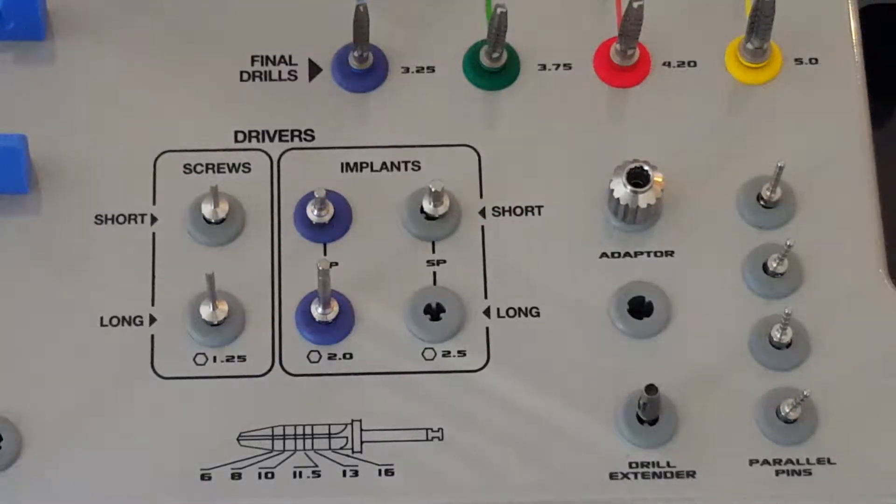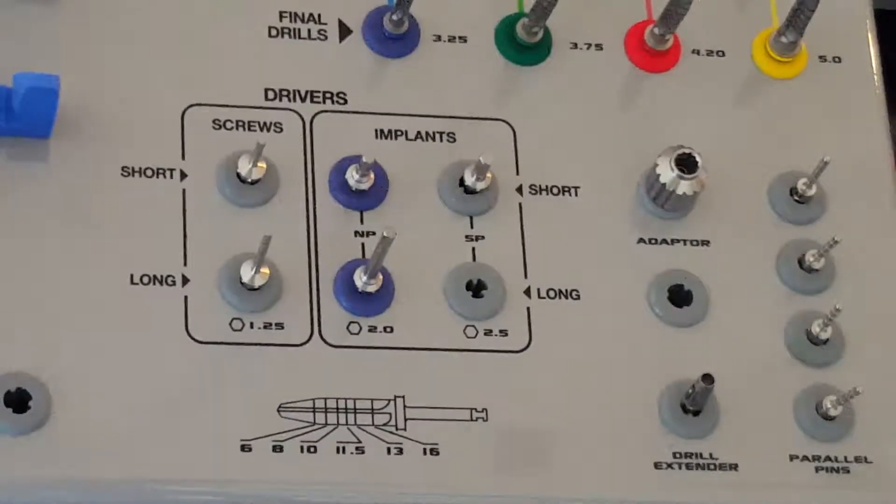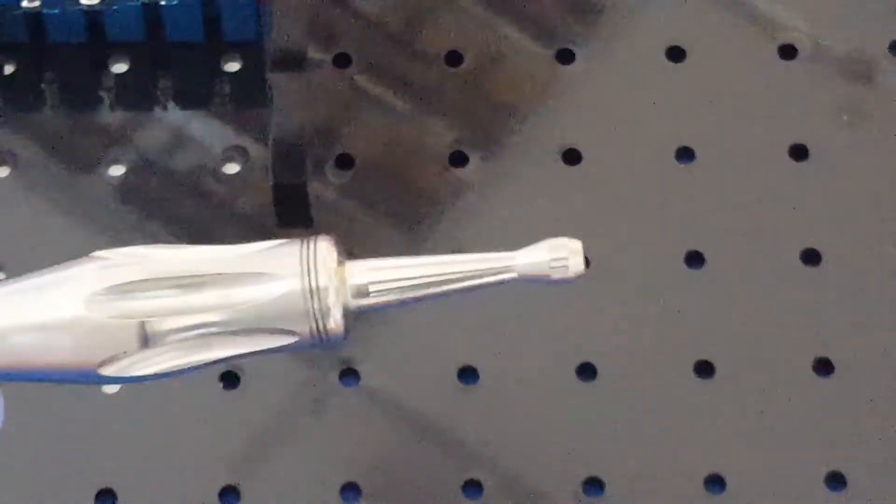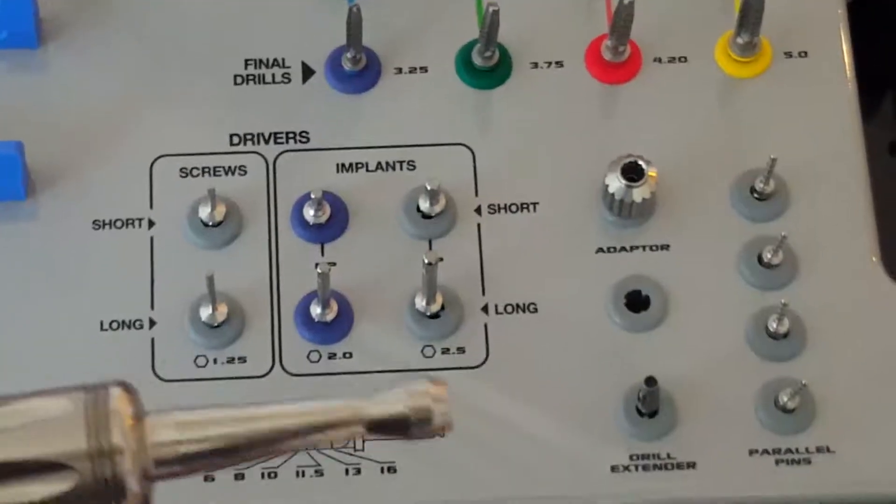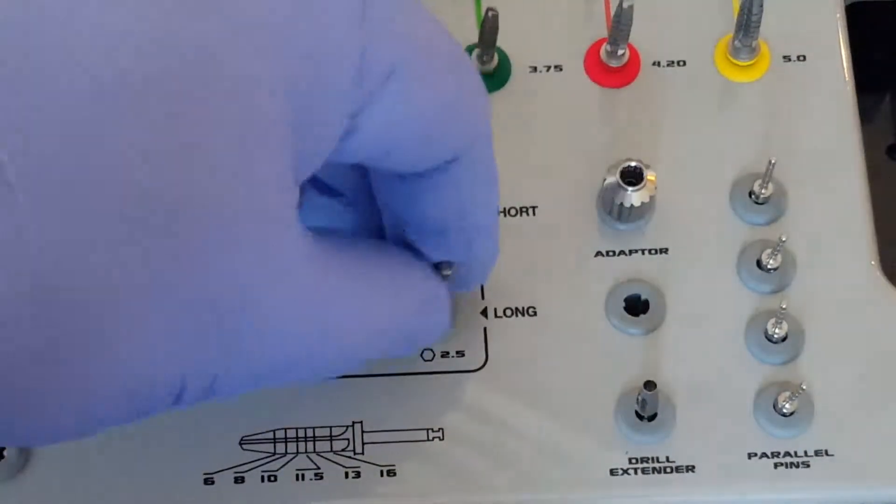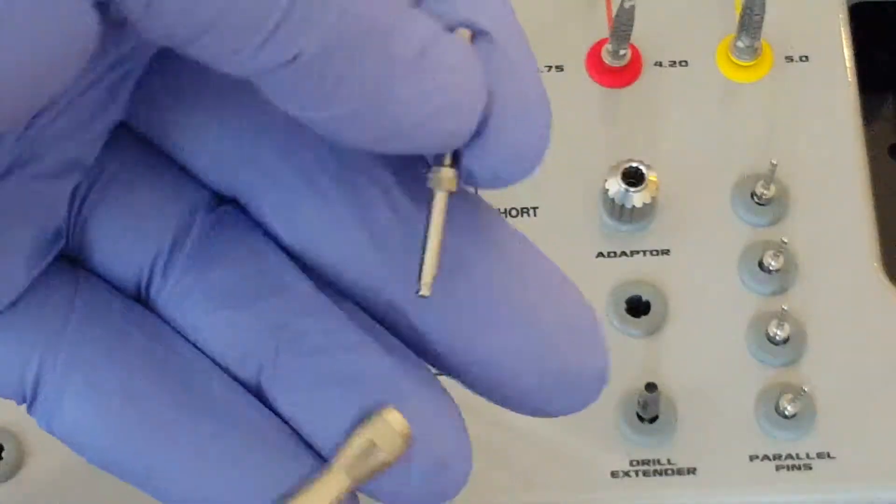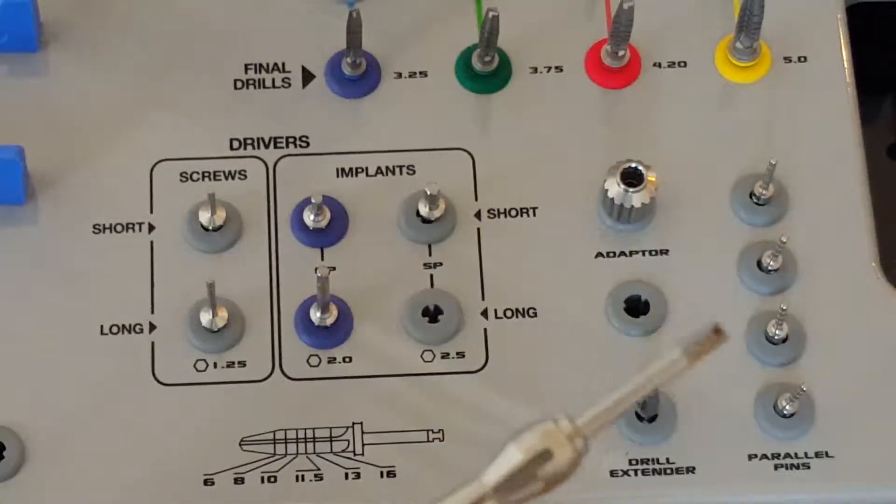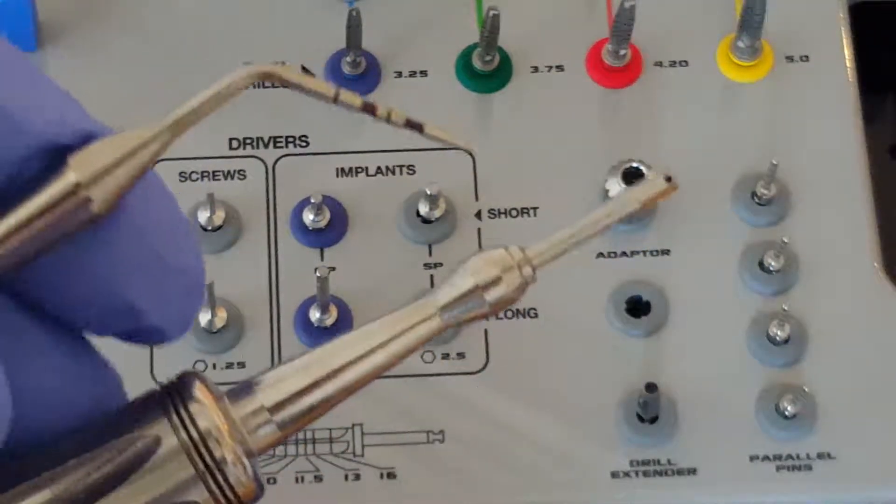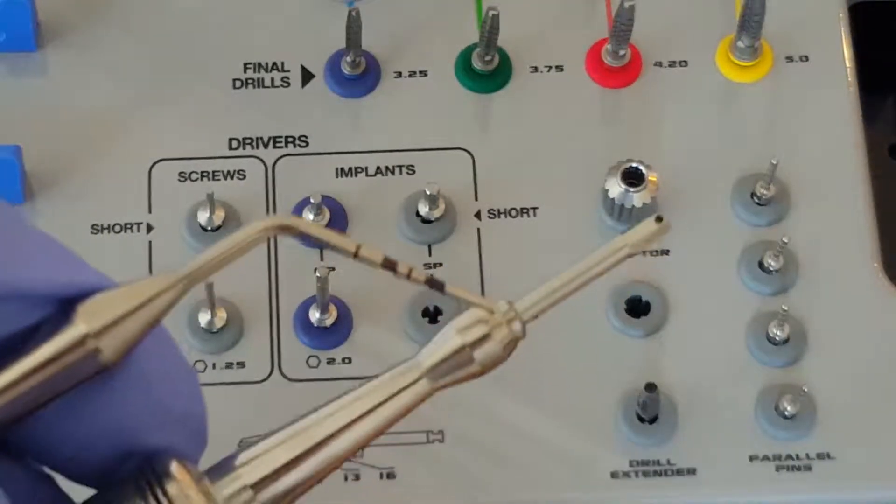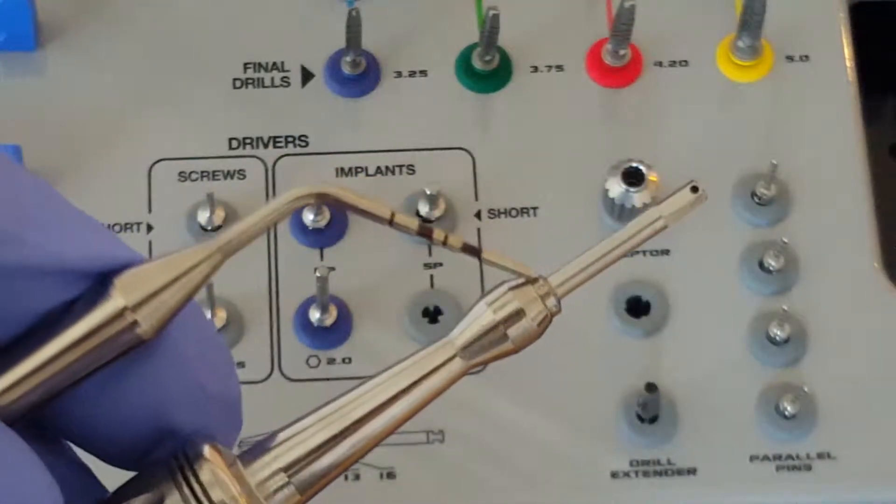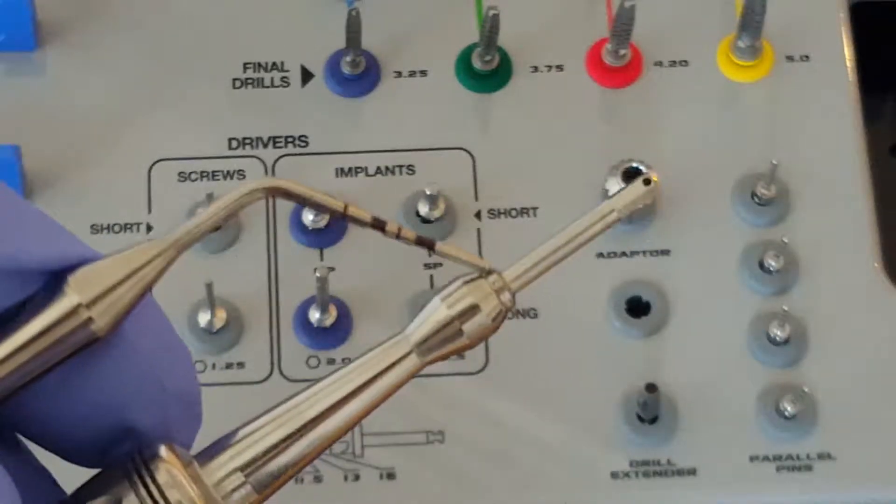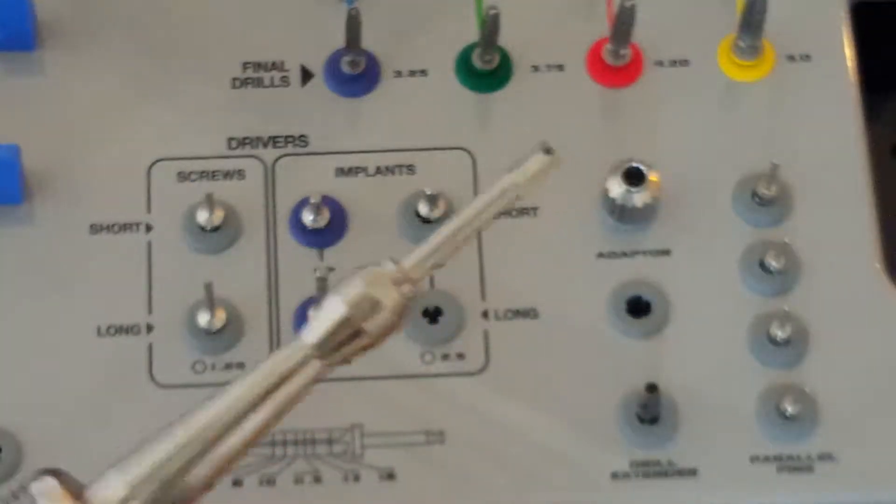We can also utilize one other device to insert the implant, utilizing the hand driver in the base of the tray. I can take the implant insertion key and slide it into the driver. On the driver I can see that there are dots. These dots correspond to the flat of the hex on the implant, so we can control the position.